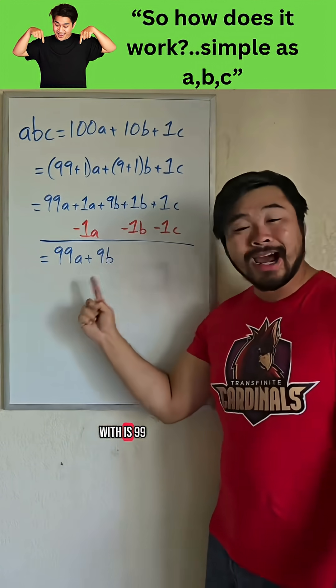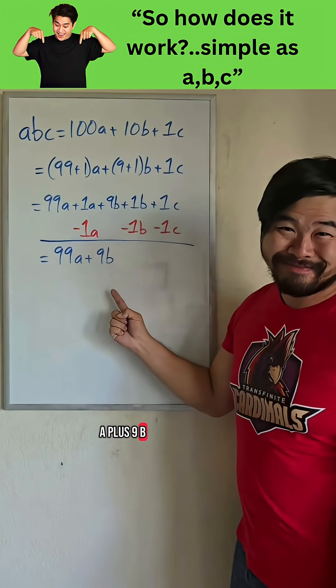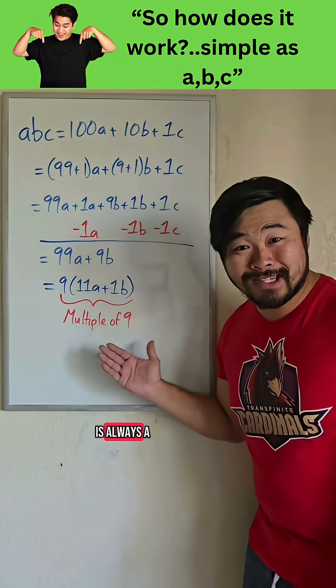So all we're left with is 99A plus 9B, and we can see that this is always a multiple of 9.